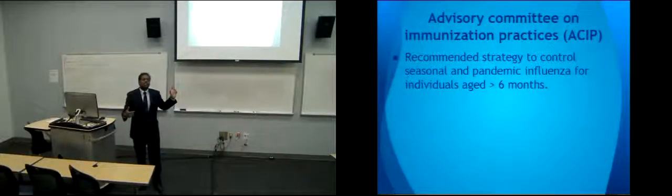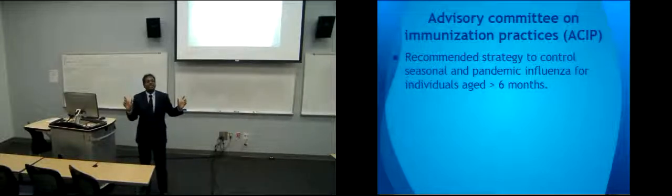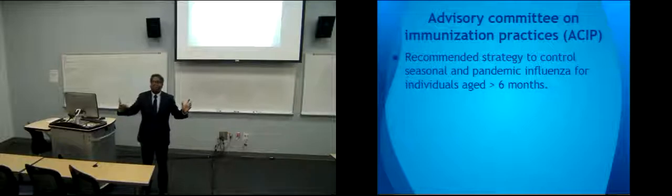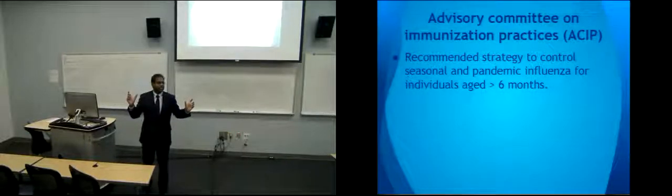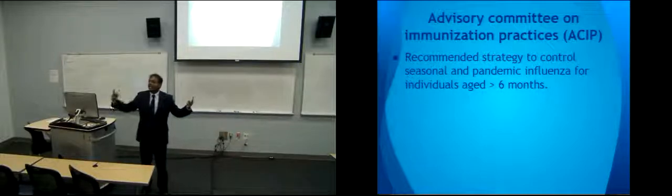In the context of a pandemic, vaccine supplies may not be available within the first few months when the pandemic starts. So we have three additional constraints: one with respect to coverage, one with respect to efficacy, and the other is delay in the availability of the vaccine.